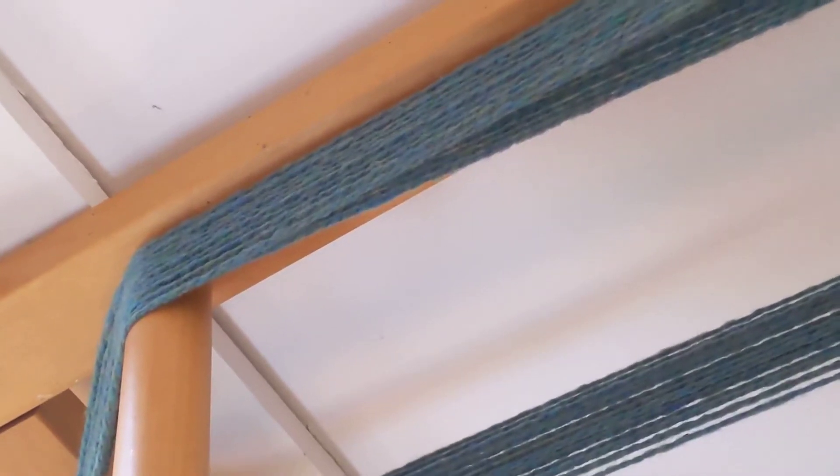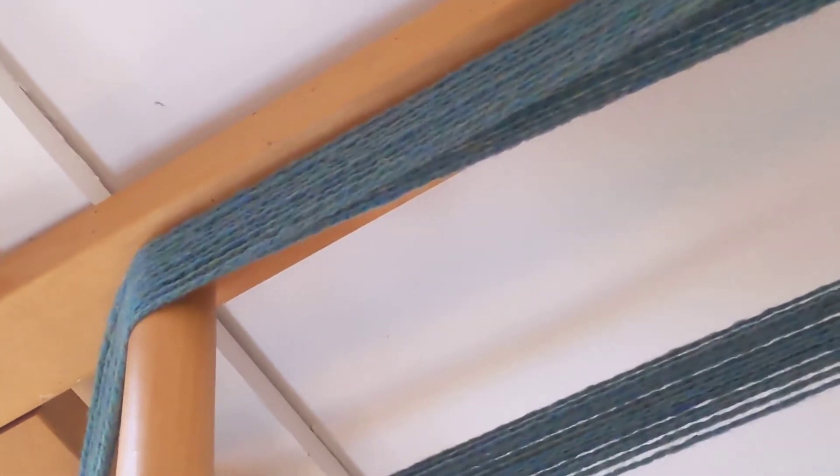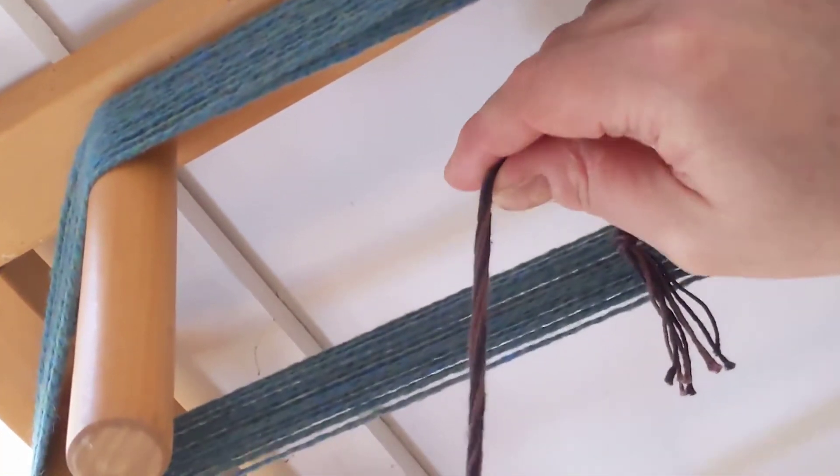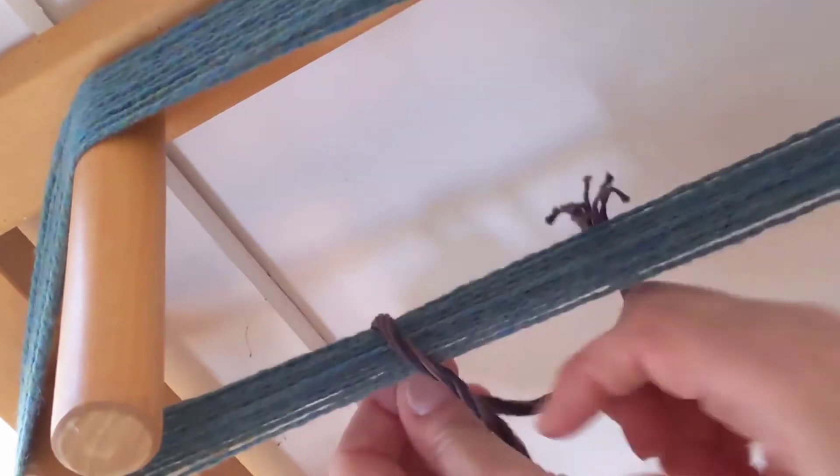Hey, this is Dina Moses and I just want to show you a quick knot because it's my absolute favorite. This is about tying choke ties so that you have a really tight tie around your warp.